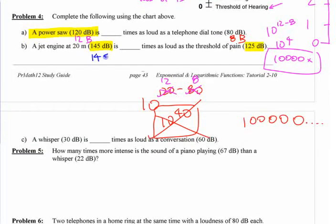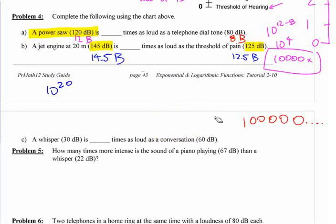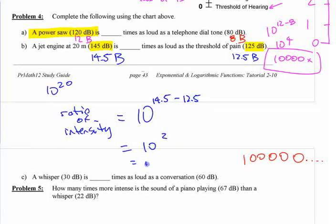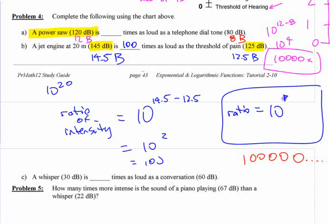Anyways, these two things here, this is 14.5 bells. This is 12.5 bells. You don't subtract those two numbers and say 10 to the 20th. 10 to the 20th is a very, very, very large number. It's 10 to the, and I'm not doing a very good job of showing my work here, but let's do a better job for this question. Let's say the ratio of intensity equals 10 to the power of 14.5 minus 12.5 equals 10 to the 2 equals 100. This is 100 times as loud.